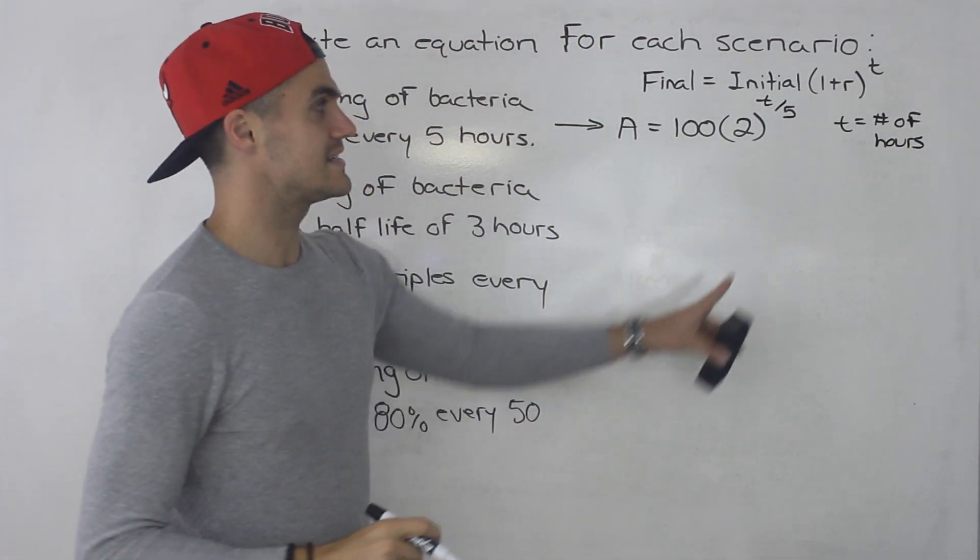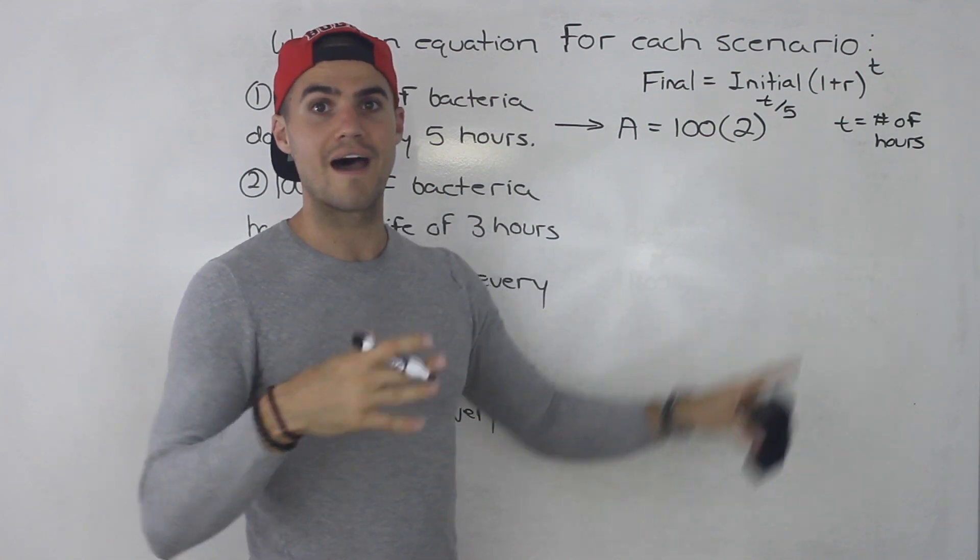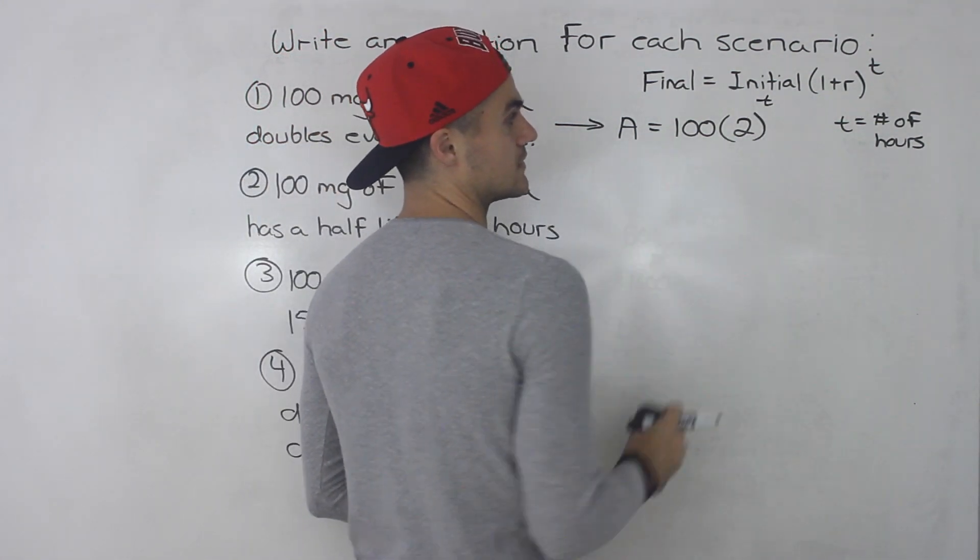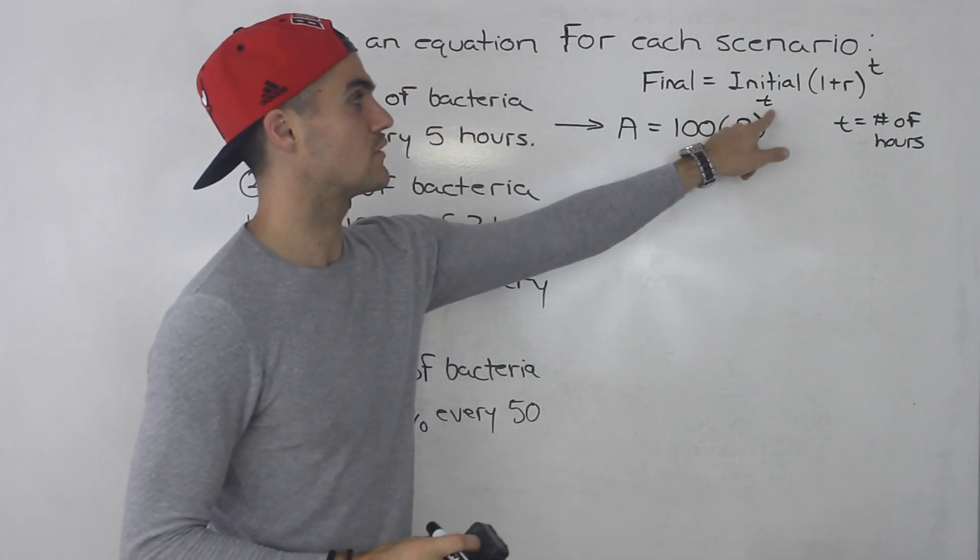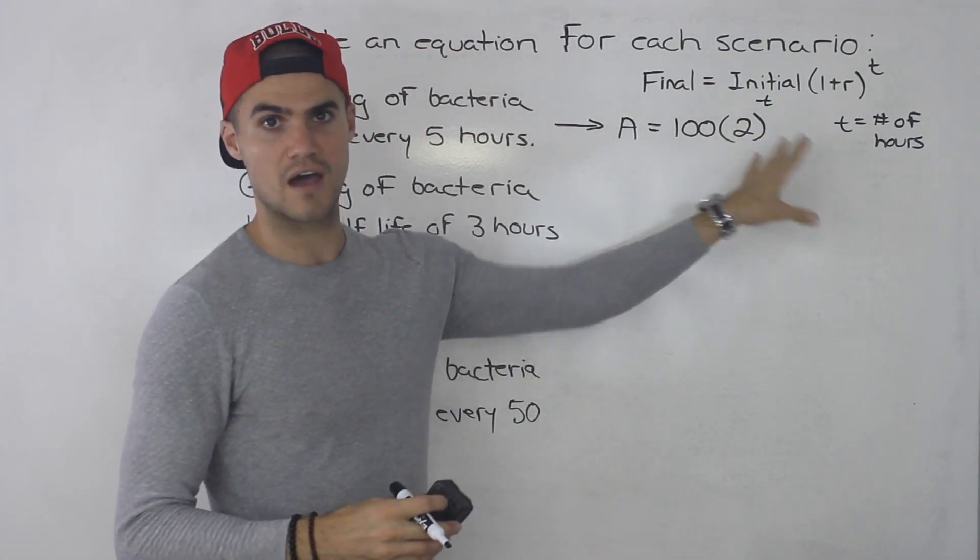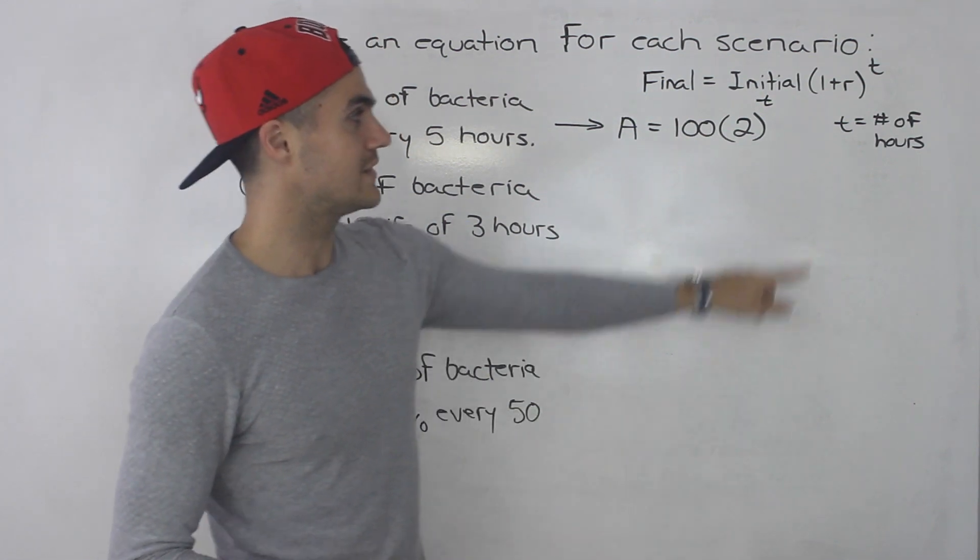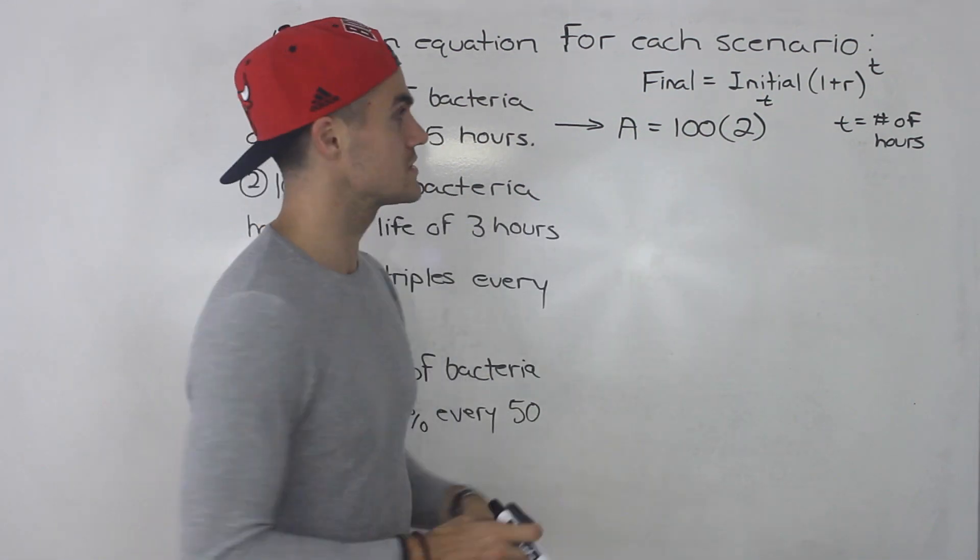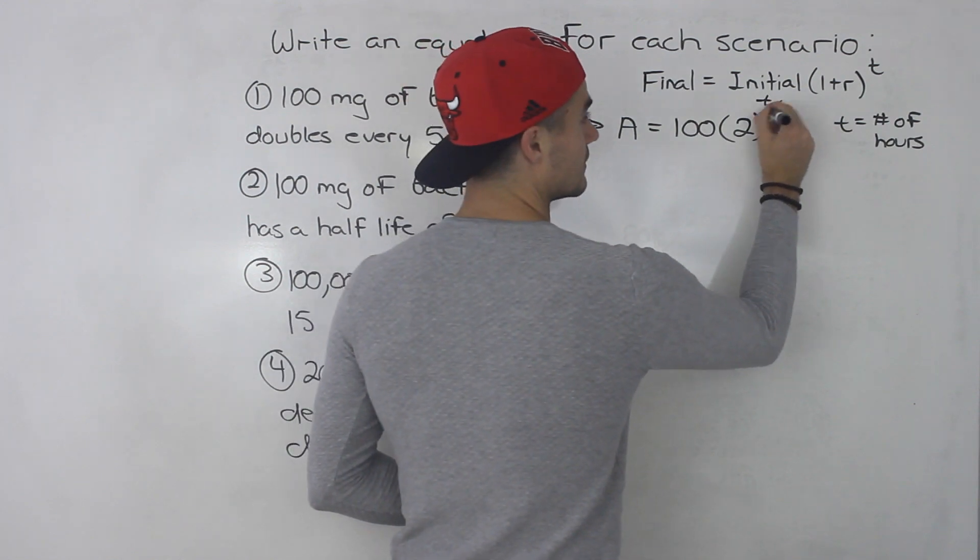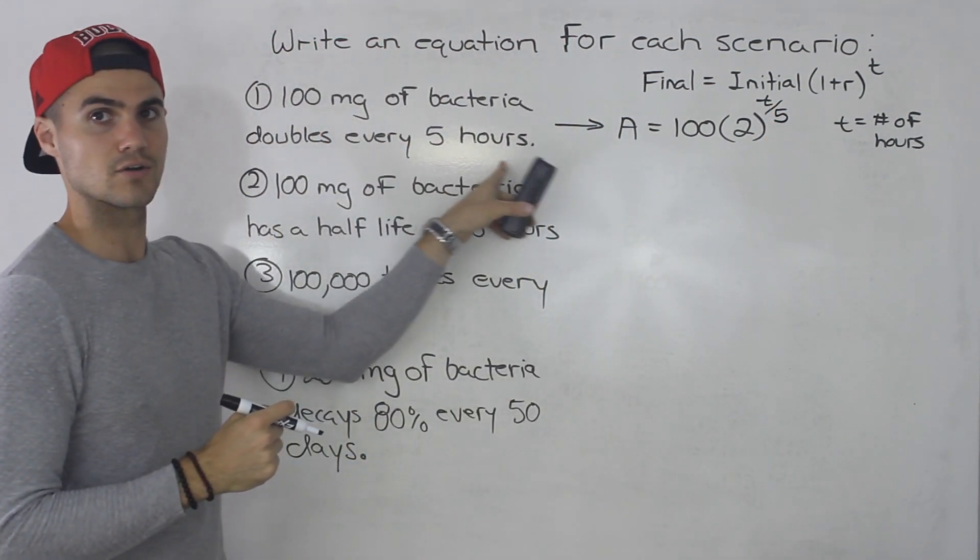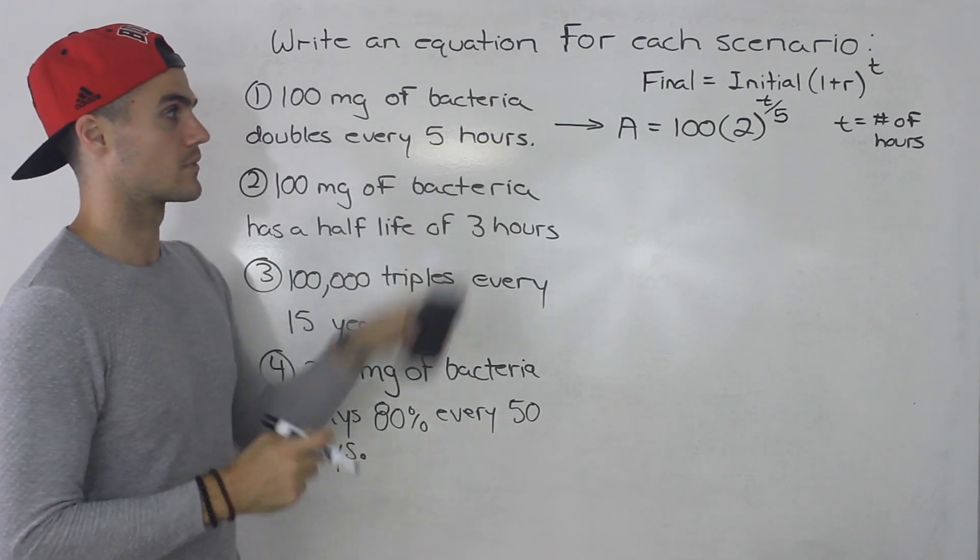Now, if we let t be the number of five hour periods, then we would just put a single exponent here t. Because a t value of one would represent five hours. A t value of two would represent 10 hours. But if we let t equal the number of hours, then we got to divide it by whatever that scenario tells us in that part there.